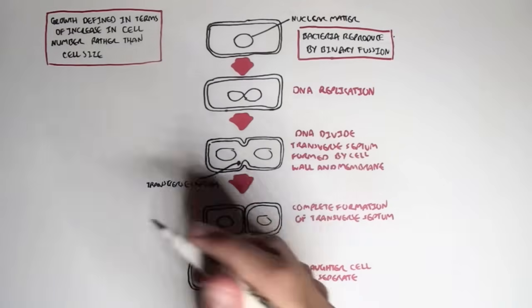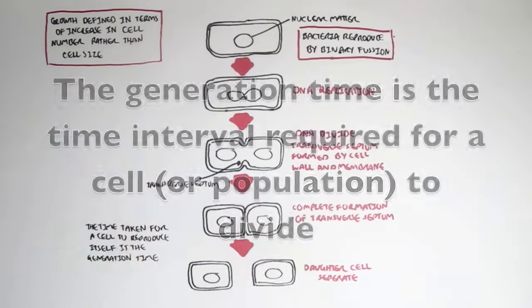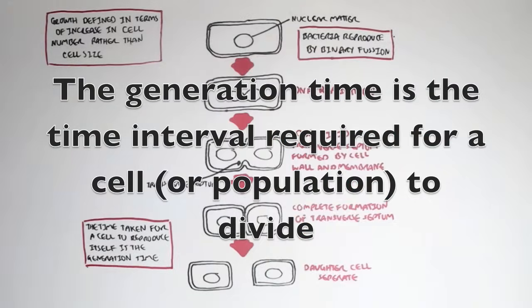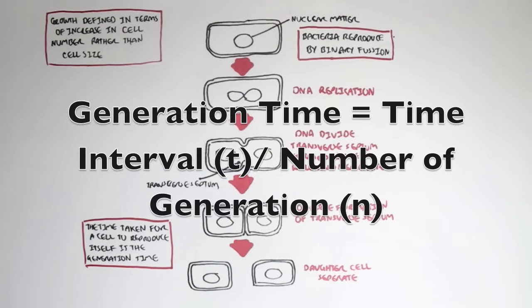Now the time taken for a cell, the bacteria, to reproduce itself is called the generation time. This can vary depending on the type of organism and environment conditions. Under favorable conditions, for example, the bacteria can reproduce a lot. Under bad conditions, they won't reproduce at all. You can calculate the generation time by doing simple mathematics, where generation time equals time taken divided by the number of generations.